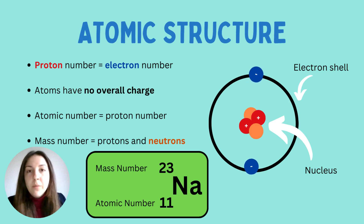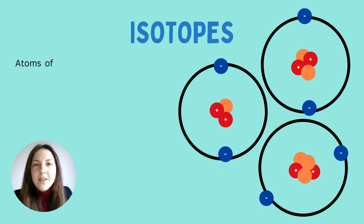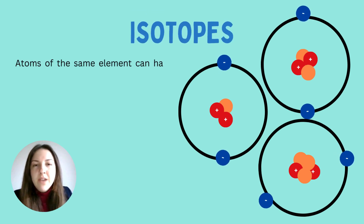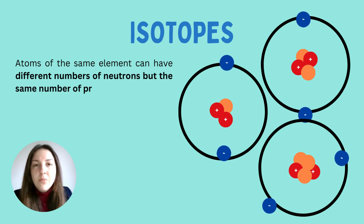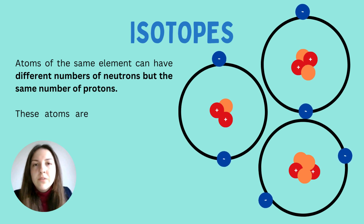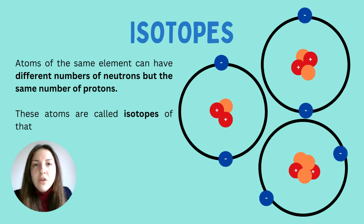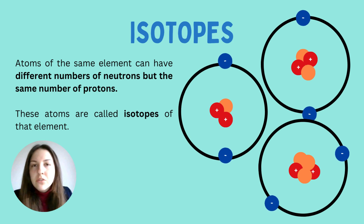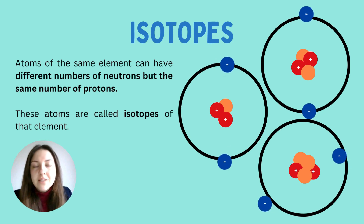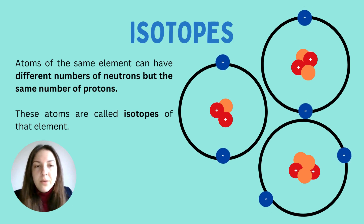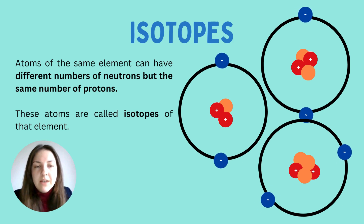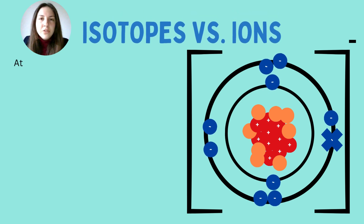So what actually are isotopes? They are different versions of an atom. Every atom of the same element can have different numbers of neutrons but the same number of protons. It's really important that the proton numbers stay the same, because this influences how many electrons there are — the overall charge of an atom is zero. The number of neutrons can differ, and this is where isotopes are formed. In the example shown, the number of protons is exactly the same — two in each case — but the number of neutrons slightly differs.